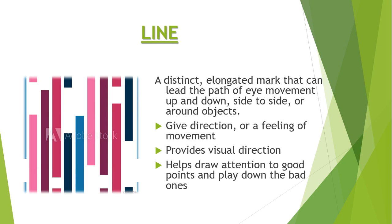Next, we will talk about line. A line is a distinct mark that leads the path of eye movement — up and down, side to side, or around an object. Lines give direction or a feeling of movement, provide visual direction, help draw attention to good points, and play down the bad ones.